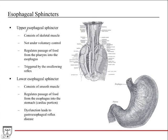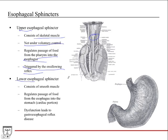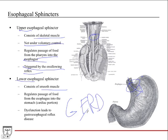The esophagus has two sphincters: the upper and the lower esophageal sphincter. The upper esophageal sphincter consists of skeletal muscle but is not under voluntary control — it regulates passage of food from the pharynx into the esophagus and is triggered by the swallowing reflex. The lower esophageal sphincter consists of smooth muscle and regulates passage of food from the esophagus into the stomach, specifically the cardiac portion. Dysfunction of this sphincter leads to GERD, gastroesophageal reflux disease, a very common problem.